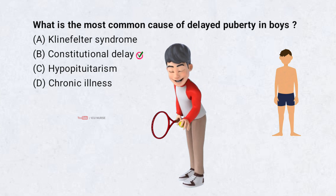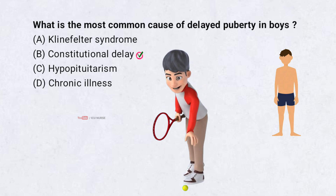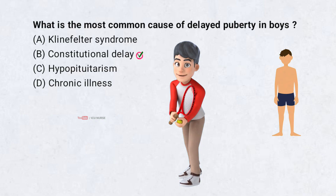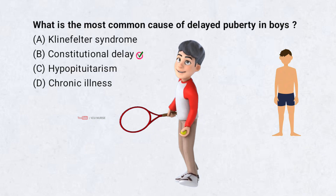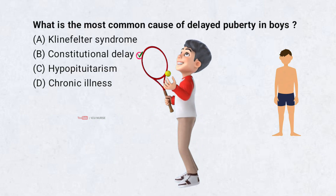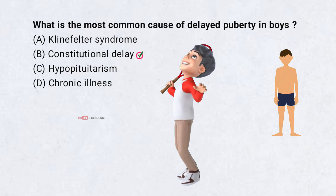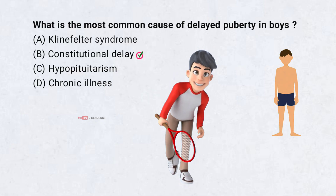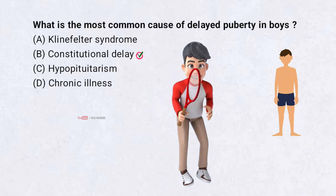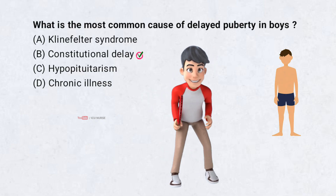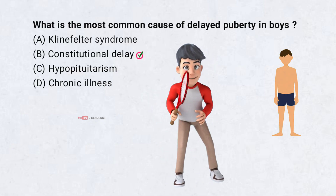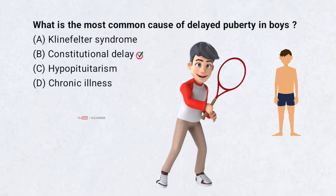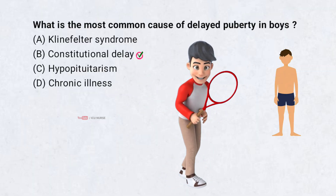Constitutional delay is the most common cause of delayed puberty in boys. These boys are usually healthy but develop puberty later than their peers. It often runs in families. Bone age is delayed but eventual adult height is normal. No treatment is needed unless there is emotional distress.